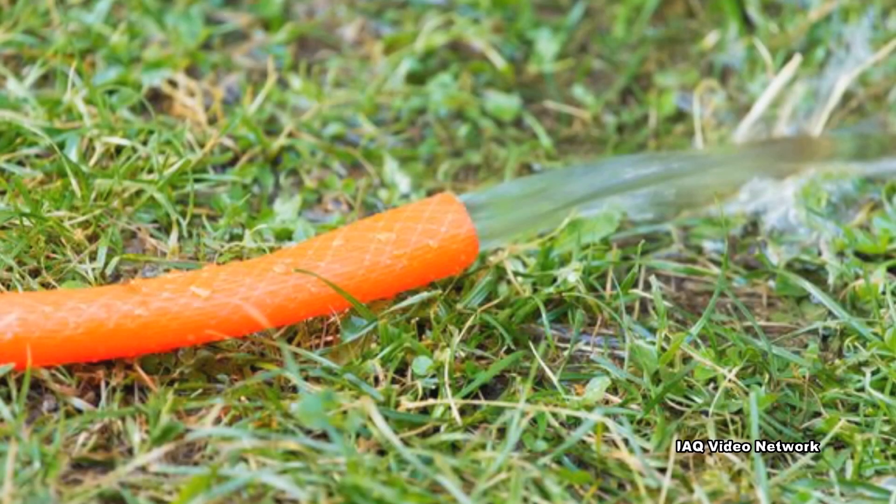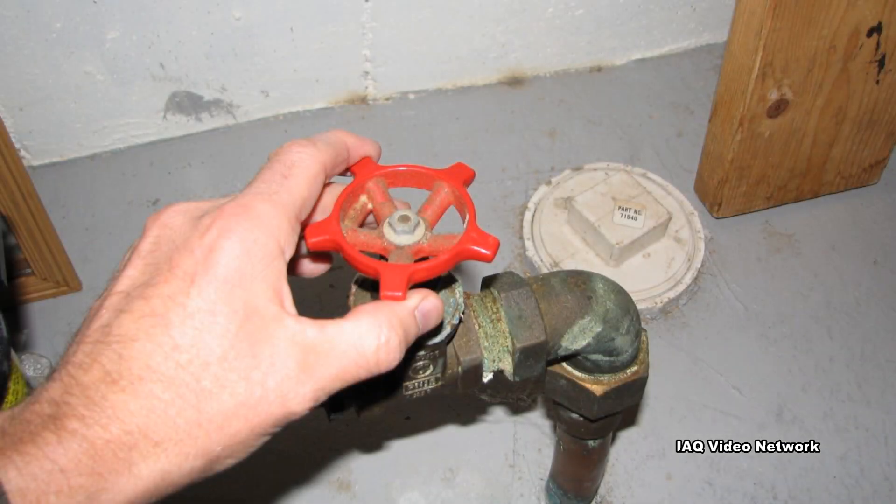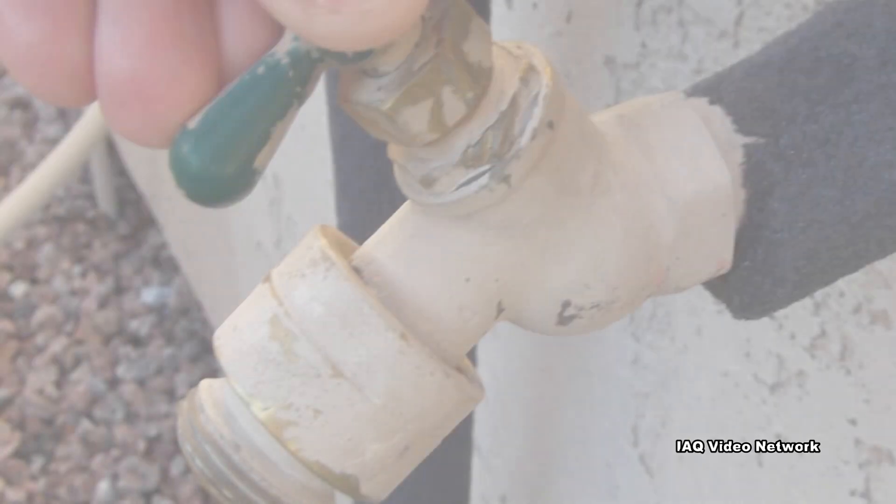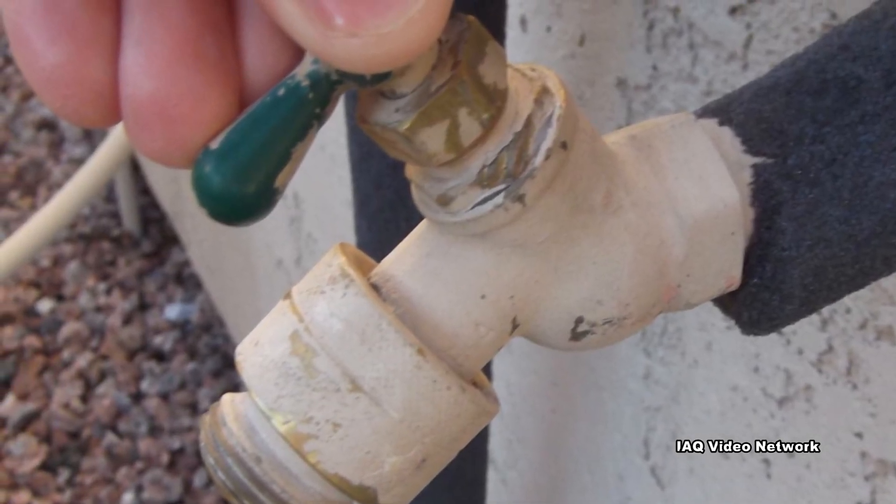Remove and drain outdoor hose connections. If there is an indoor valve to these outdoor bibs, turn them off. Allow the pipes to drain and leave the outside valve open to allow any remaining water to expand without bursting the pipes.